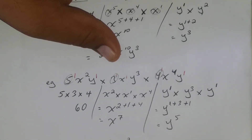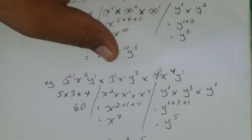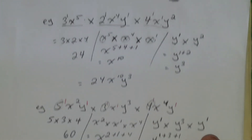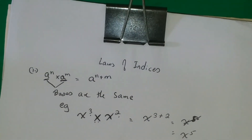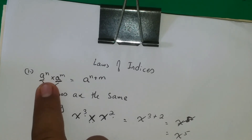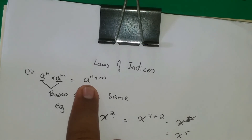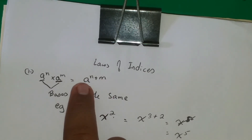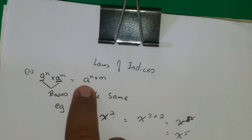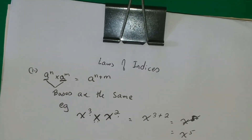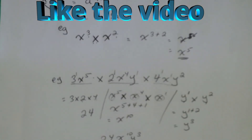That is the first law of indices: a to the n times a to the m equals a to the n plus m. It is telling you that the bases need to be the same — the same number or the same letter — and then you simply add the powers. We've now covered that law with multiple examples.